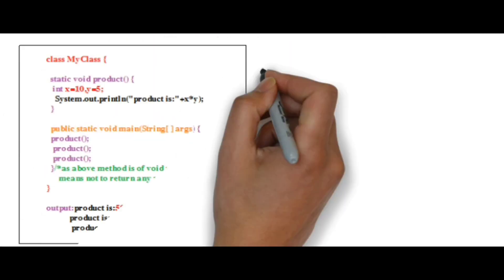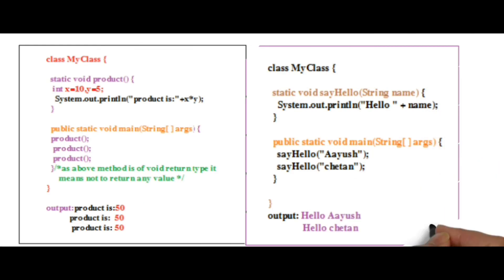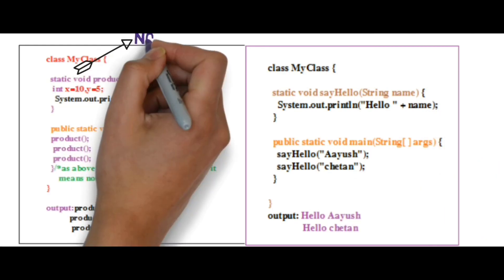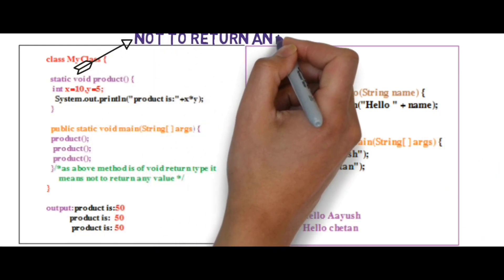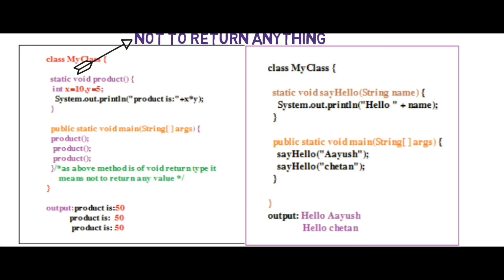Let's see another example where we are not returning any value. Here void is the return type, which means not to return anything. In the main method we are declaring the prototype of our method, which prints output statement of our method definition. Pause the video for a while and check out the difference between two programs.